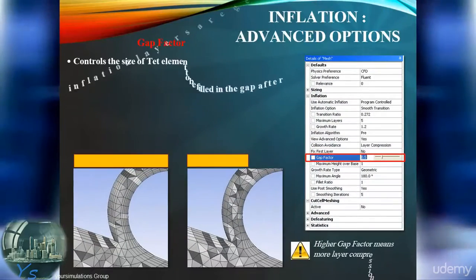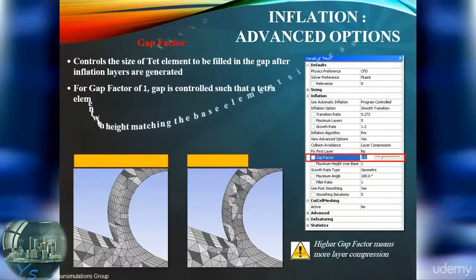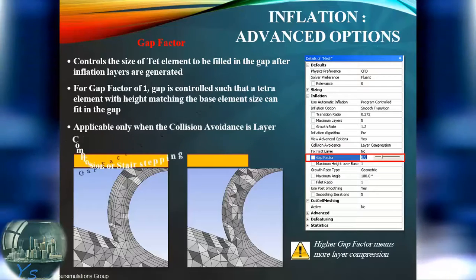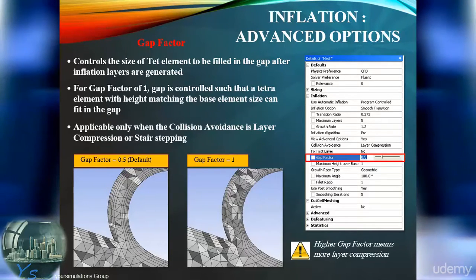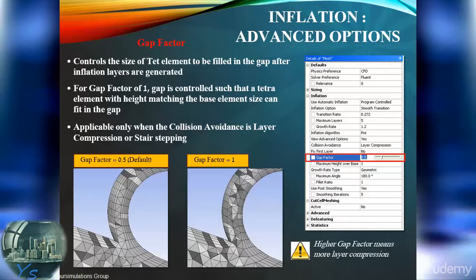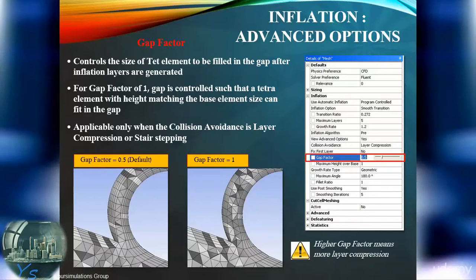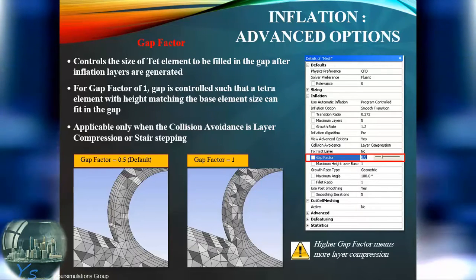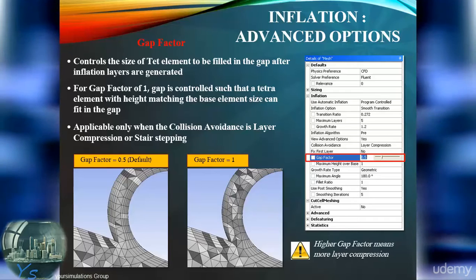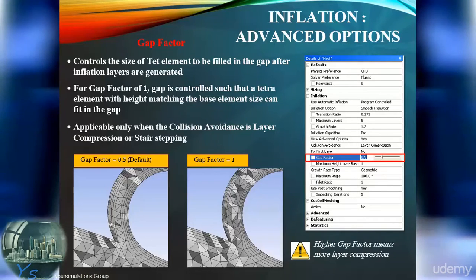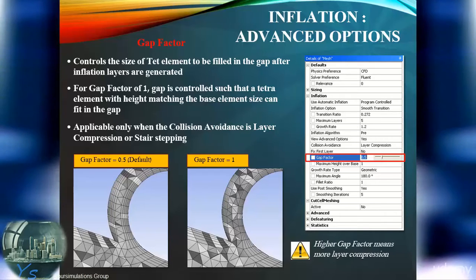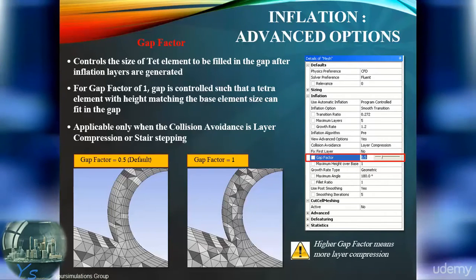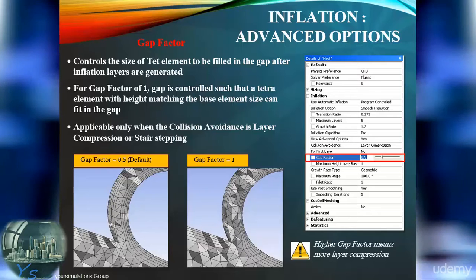The gap vector controls when stair stepping or layer compression starts and how intense it is. The default value is 0.5, which means that the element height of the volume mesh between two prism layers is half of the base size of the surface. Increasing this value increases the aggressiveness of the layer compression or stair stepping. It is not recommended to use a value much below 0.5.